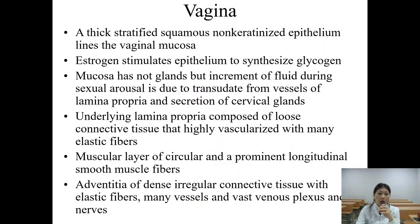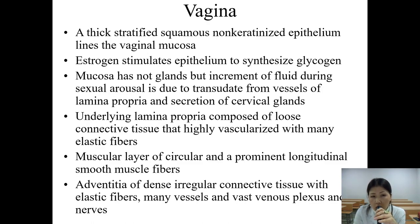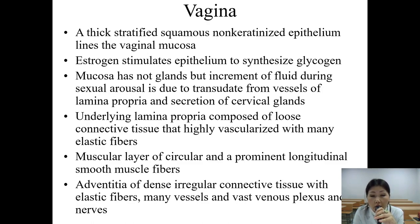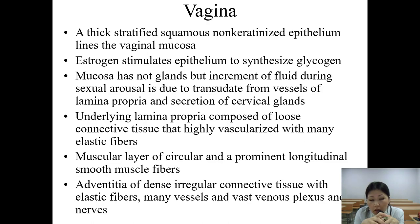Regarding the vagina: a thick stratified squamous non-keratinized epithelium lines the vaginal mucosa. Estrogen stimulates the epithelium to synthesize glycogen. The mucosa has no glands, but the increment of fluid during sexual arousal is due to transudate from vessels of the lamina propria and secretion of cervical glands. The underlying lamina propria is composed of loose connective tissue that is highly vascularized, with many elastic fibers, and a muscular layer of circular and prominent longitudinal smooth muscle fibers.